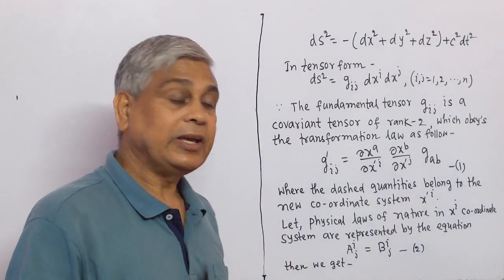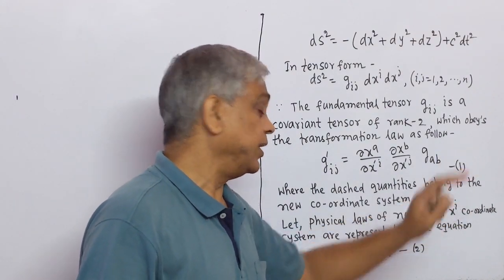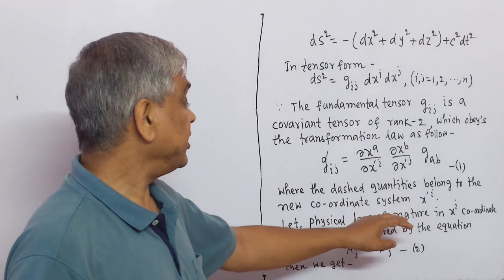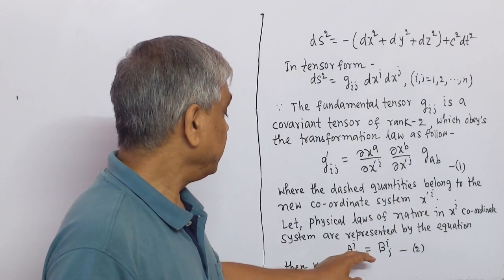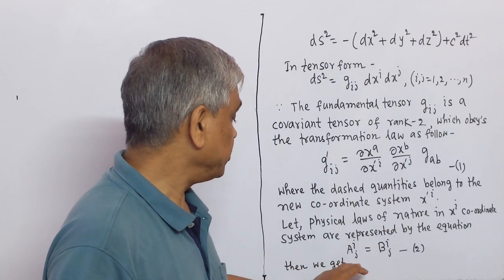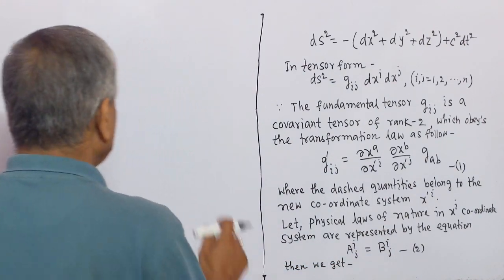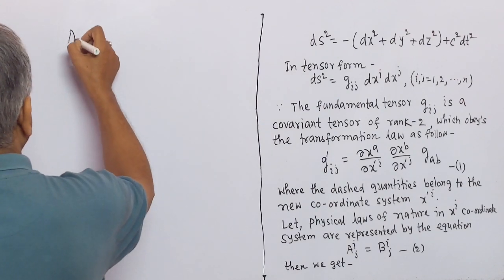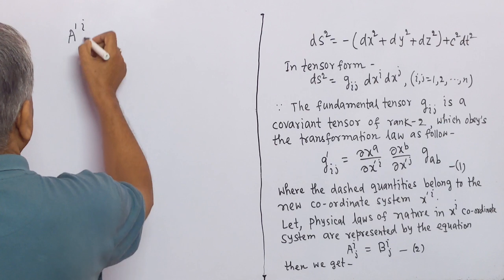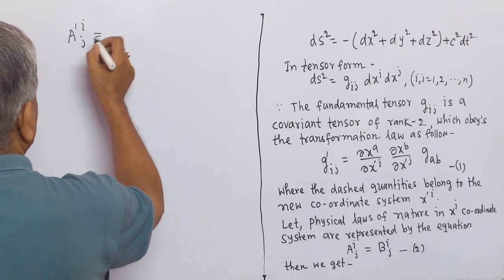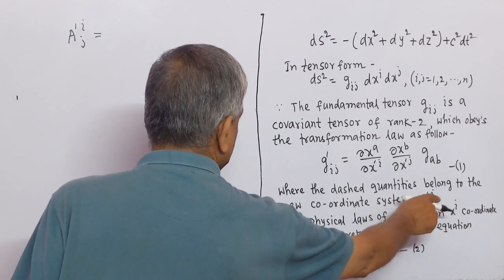Let the physical laws of nature in xⁱ coordinate system be represented by the equation aʲᵢ = bʲᵢ, which is a mixed tensor of rank 2. Then in the coordinate system x'ⁱ, we get a'ʲᵢ.